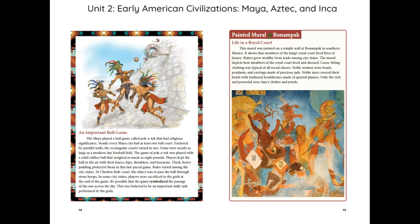Painted Mural at Bonampak — Life in a Royal Court: This mural was painted on a temple wall at Bonampak in southern Mexico. It shows that members of the king's royal court lived lives of luxury. Rulers grew wealthy from trade among city-states. The mural depicts how members of the royal court lived and dressed. Loose-fitting clothing was typical of all social classes. Noble women wore beads, pendants, and earrings made of precious jade. Noble men covered their heads with feathered headdresses made of quetzal plumes. Only the rich and powerful wore fancy clothes and jewels.